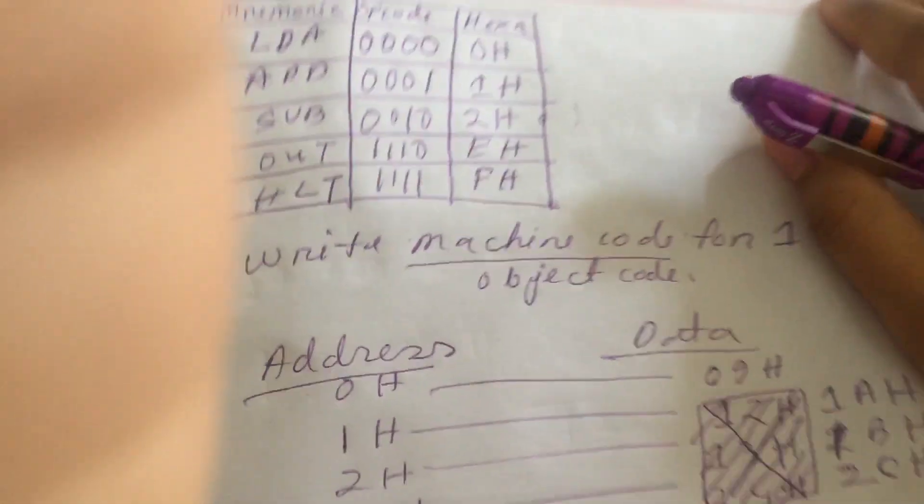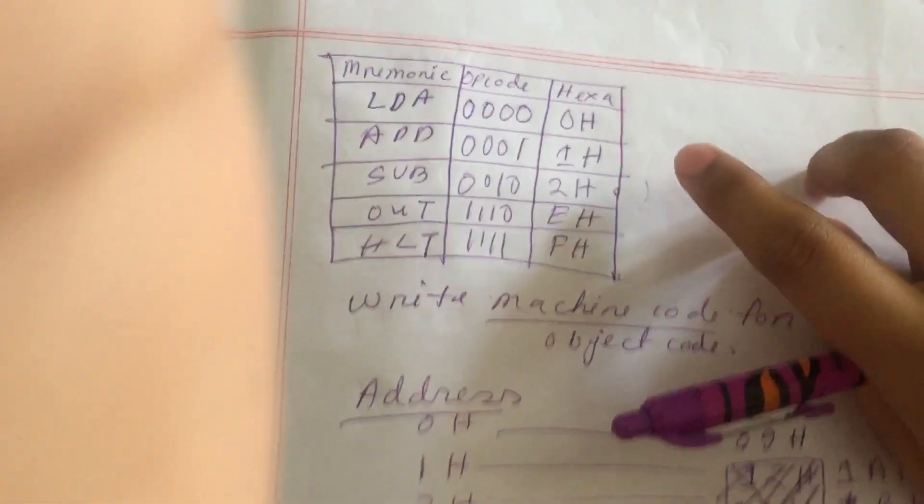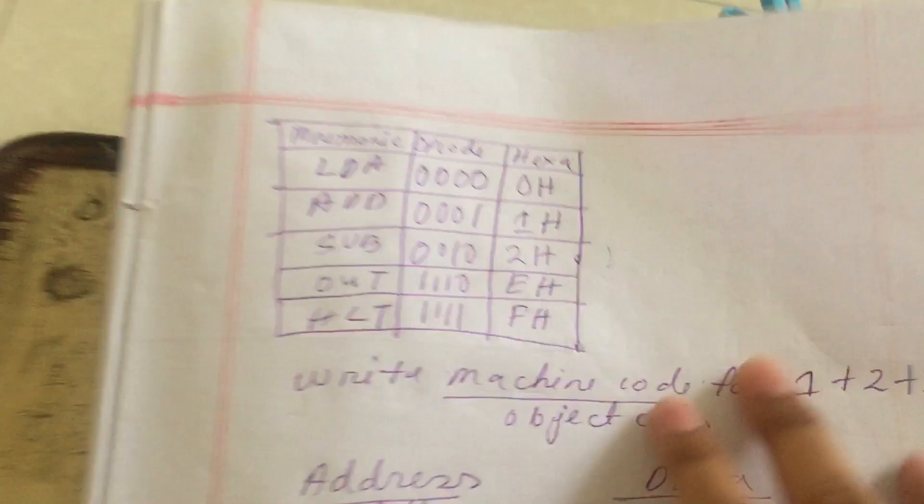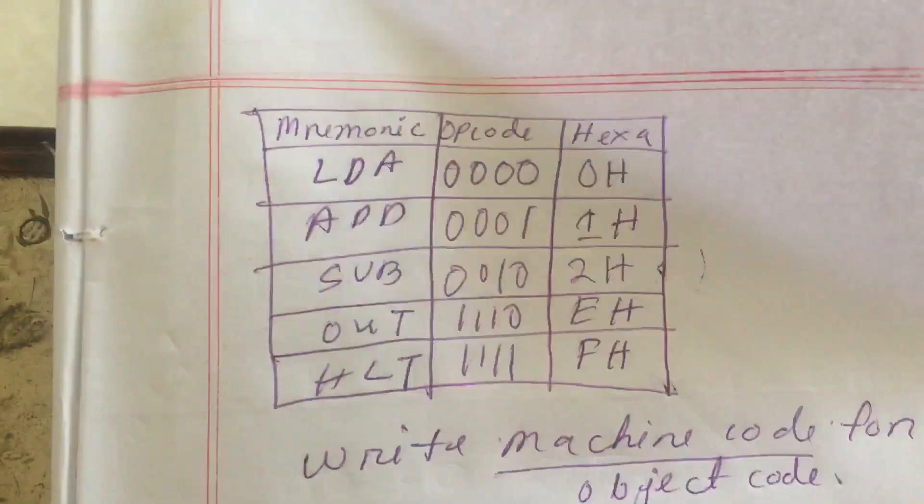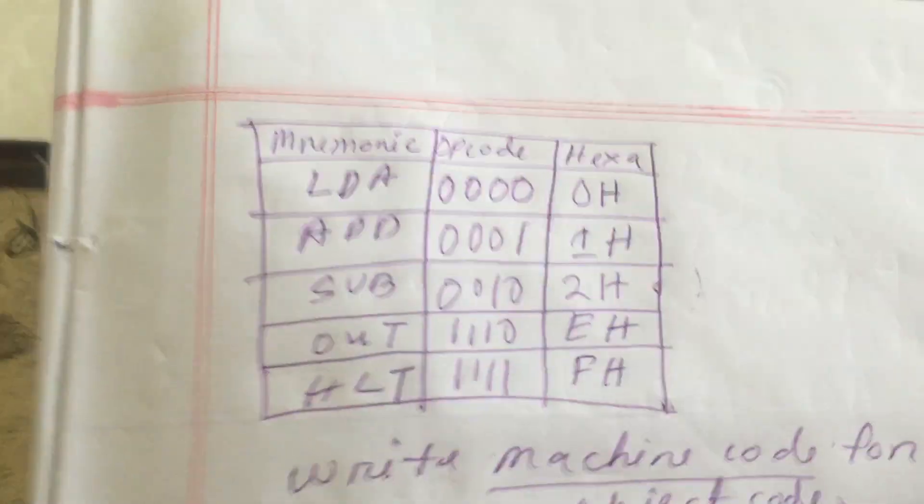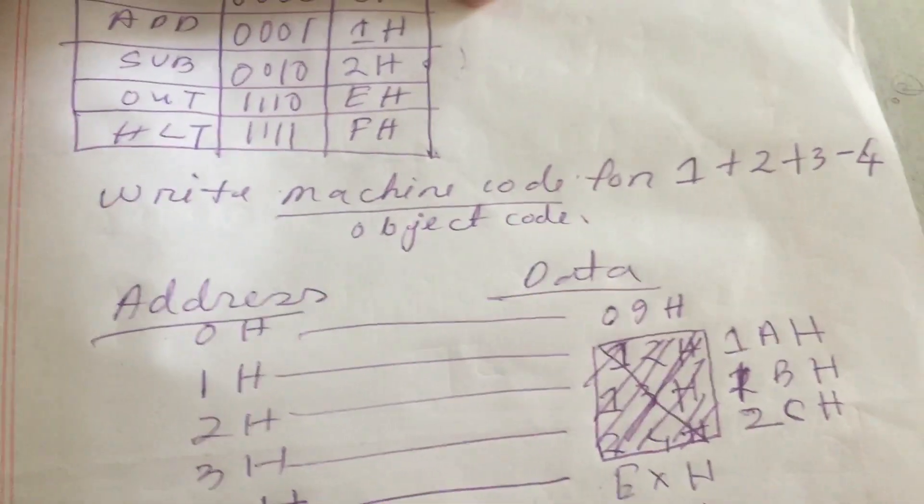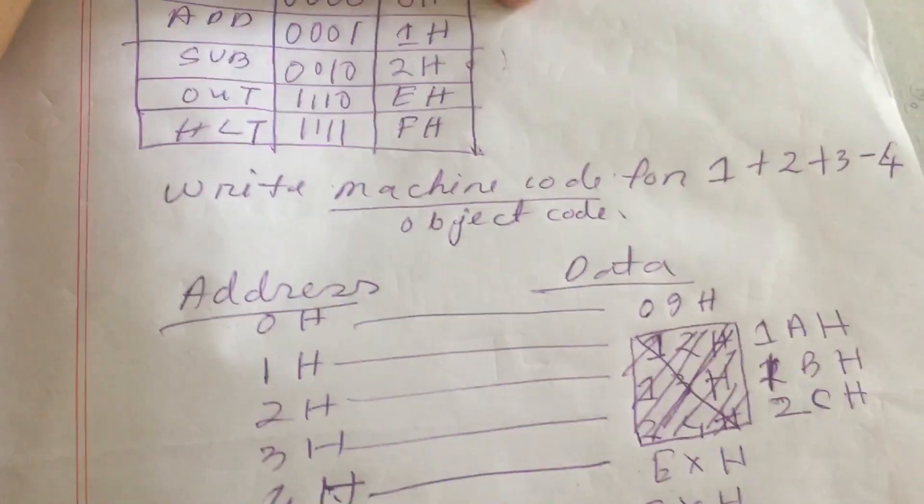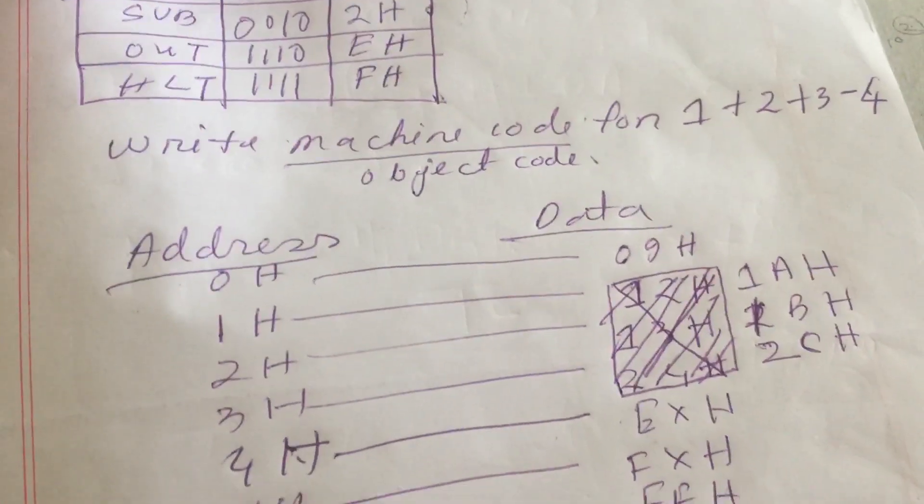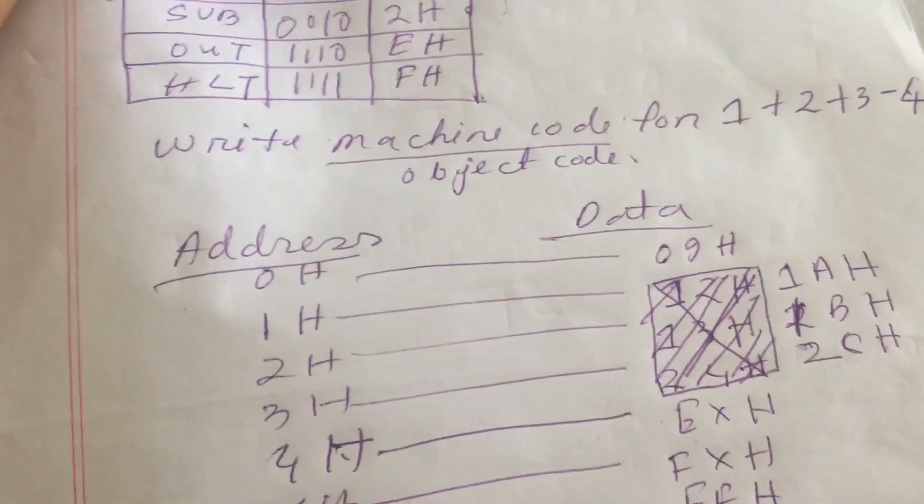Now we will see how to write the machine code. So for machine code, a table will be given like this.